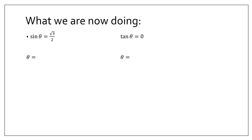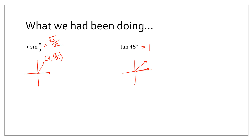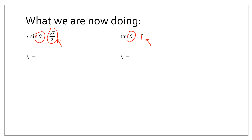But what if we go backwards? What if they tell us the trig ratio is √3/2 — what is theta? Or they say the trig ratio is 1 — what is theta? We're going backwards. I know that sine of π/3 is √3/2, so the angle that gives me √3/2 is π/3. I can look on my unit circle and ask: where is the y-value √3/2? That's right at π/3. And similarly, tangent 1 is at 45 degrees.